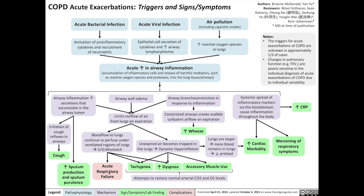In severe instances, this could lead to acute respiratory failure. But often, this simply results in the patient having to breathe harder and faster in order to attempt to restore normal arterial levels of oxygen and carbon dioxide. A limited outflow of air from the lungs on expiration also results in unexpired air being trapped in the lungs, resulting in hyperinflation, further contributing to increased respiratory rate, increased sensation of shortness of breath, and increased accessory muscle use.